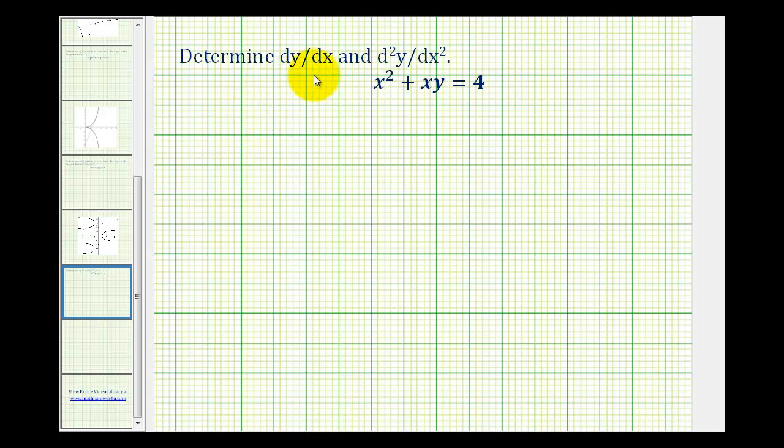Let's take a look at an example of determining the first and second derivative of an implicit function using implicit differentiation. Notice how this equation is not solved for y. That's why we'll apply implicit differentiation. While we could solve this for y, we will use implicit differentiation.